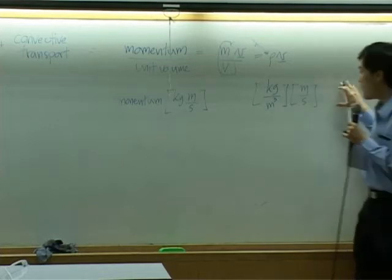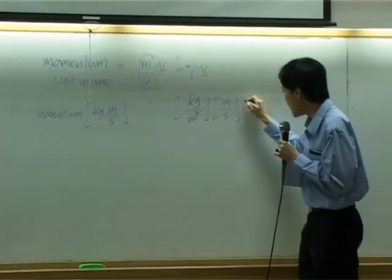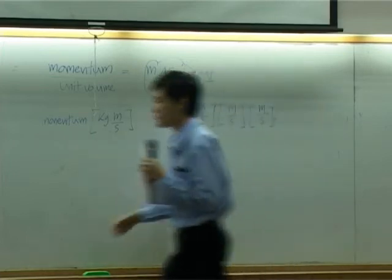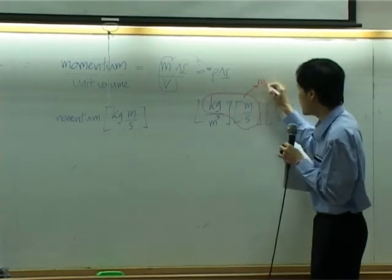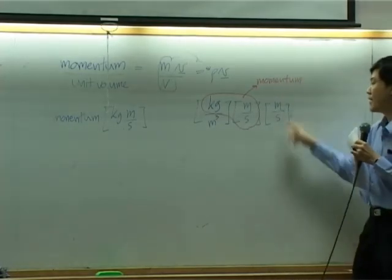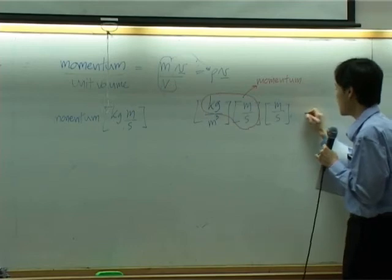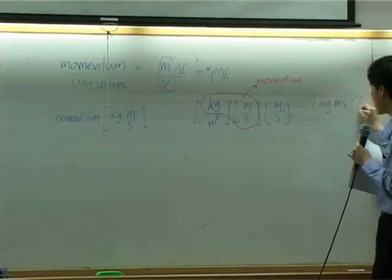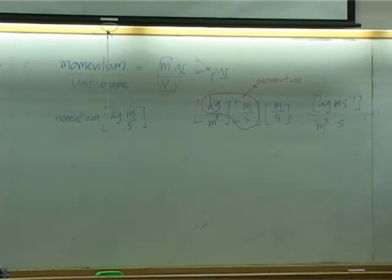Now, from this rho times velocity here, if I multiply by meter per second, you see that this part is also unit of momentum. And this meter cancels the point of this meter. At the end, you get kilogram per second, which is momentum, divided by meter square second.